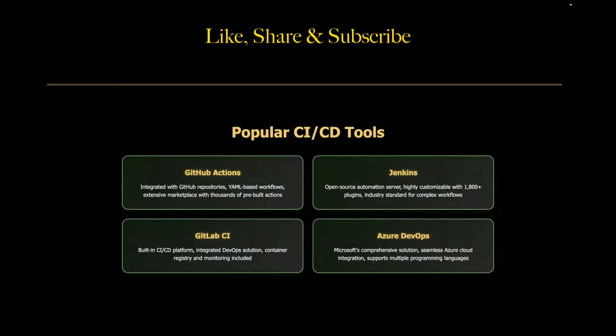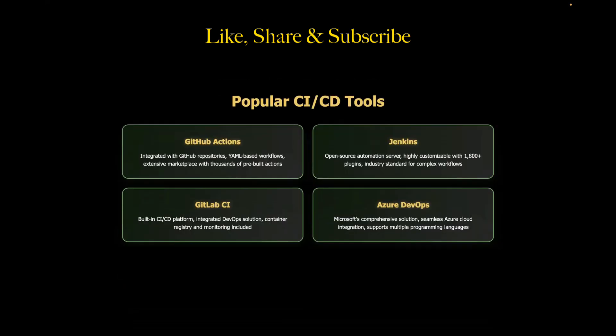Now let's talk about the tools you need to know — interviewers will definitely ask about these. First is GitHub Actions, probably the most popular right now. It is built right into GitHub, uses YAML files, and has thousands of pre-built actions. Next is Jenkins — one of the most popular tools in the market, old and reliable with over 1,800 plugins, still used by many large companies. It is complex but super powerful. Then there's GitLab CI, which gives you everything in one place: code repository, CI/CD, container registry, and monitoring. Finally, Azure DevOps — a Microsoft solution, especially popular for .NET applications or Azure cloud services, and it supports multiple languages.